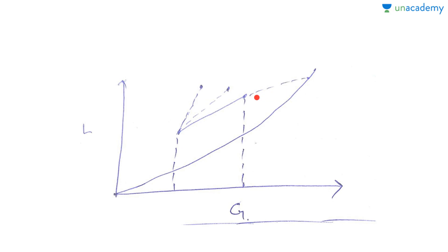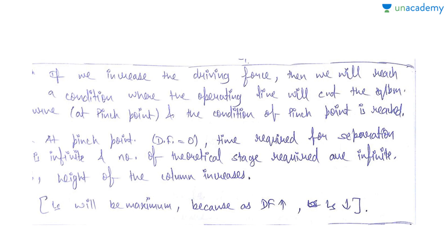In the last class we set up the counter-current mode with flow rates L and G for absorption, where the equilibrium curve lies below the operating line — equivalently, the operating line lies above the equilibrium curve. In Case 1, if we increase the driving force, the operating line cuts the equilibrium curve, reaching the pinch point where driving force equals zero, making the required separation time and number of theoretical stages infinite, so the column height increases.